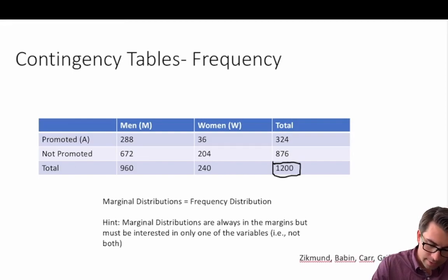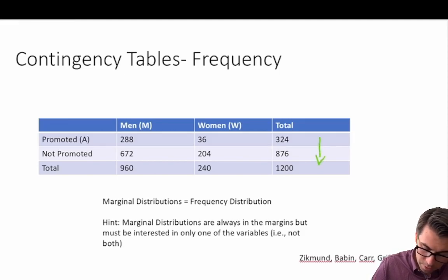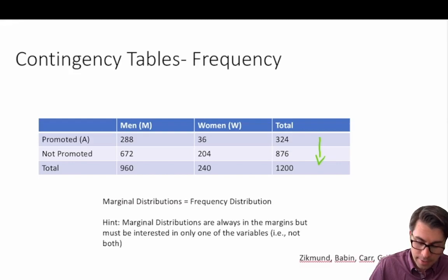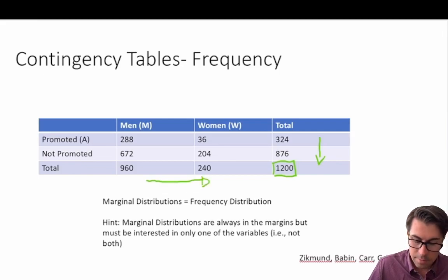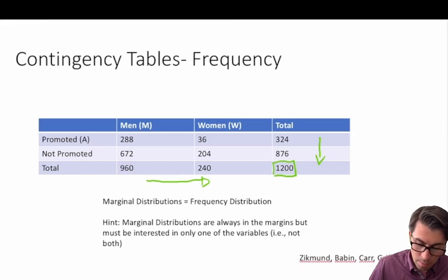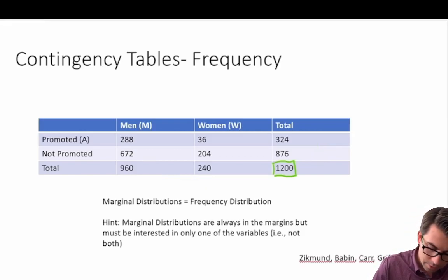If we take the sum of the rows, 324 plus 876 gives us 1200, and if we take the sum of our columns, that's 960 plus 240, we also arrive at 1200. So our total-total box must equal the sum of the columns and the sum of the rows.